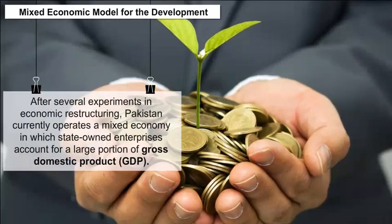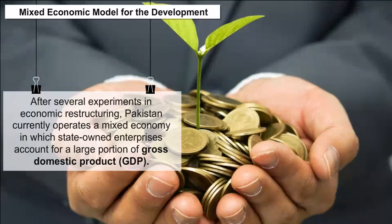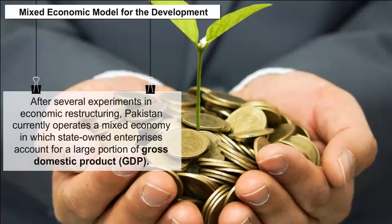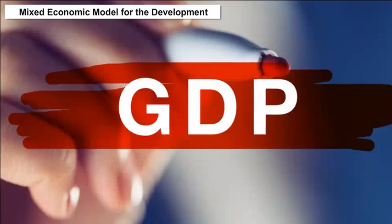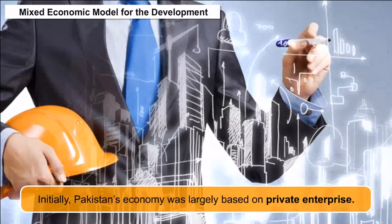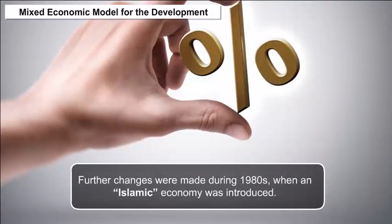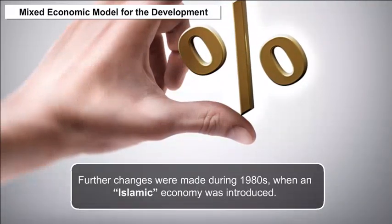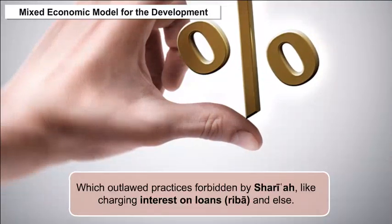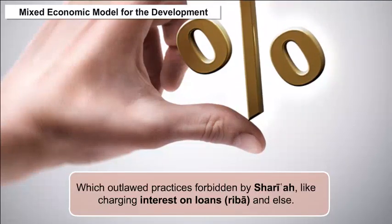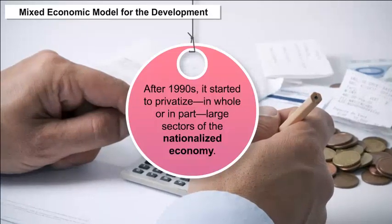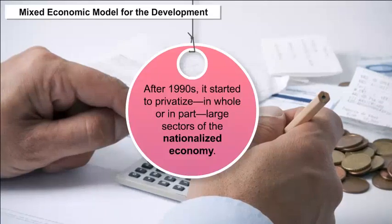After several experiments in economic restructuring, Pakistan currently operates a mixed economy in which state-owned enterprises account for a large portion of GDP. Initially, Pakistan's economy was largely based on private enterprise. Changes were made during the 1980s when an Islamic economy was introduced, which outlawed practices forbidden by Sharia, like charging interest on loans (RIBA). But after the 1990s, it started to privatize, in whole or in part, large sectors of the nationalized economy.